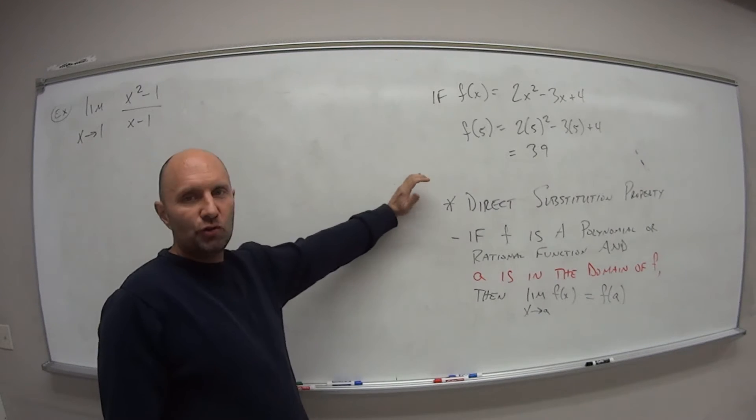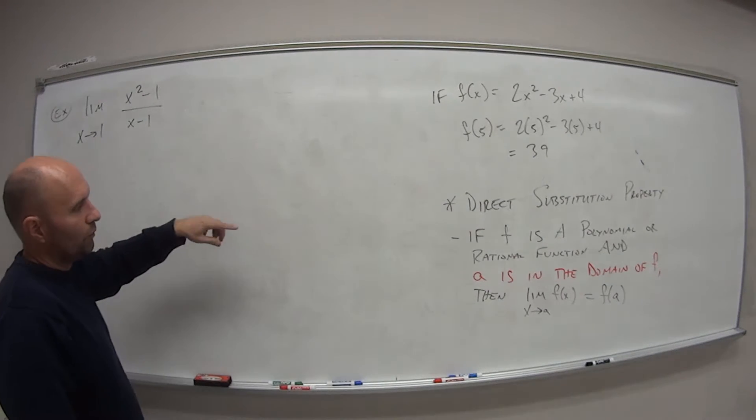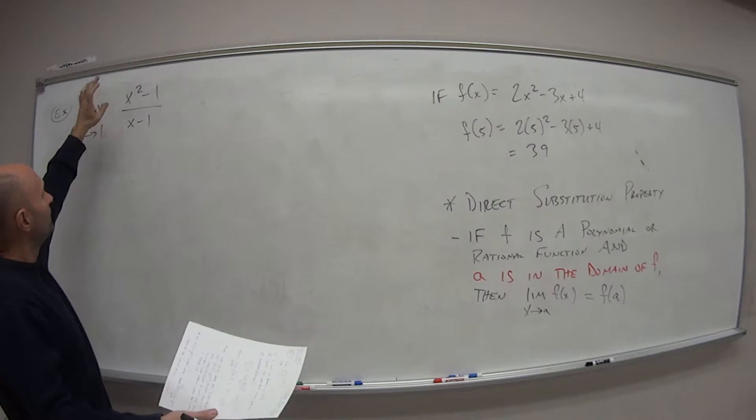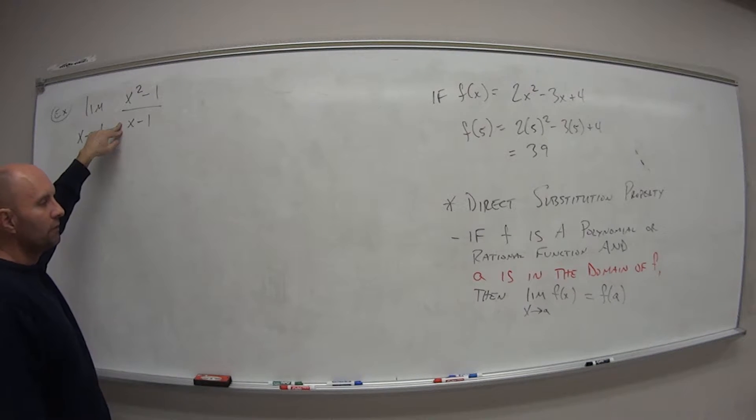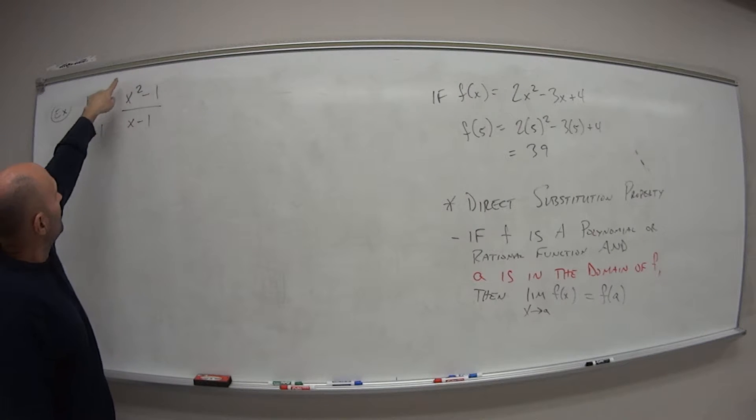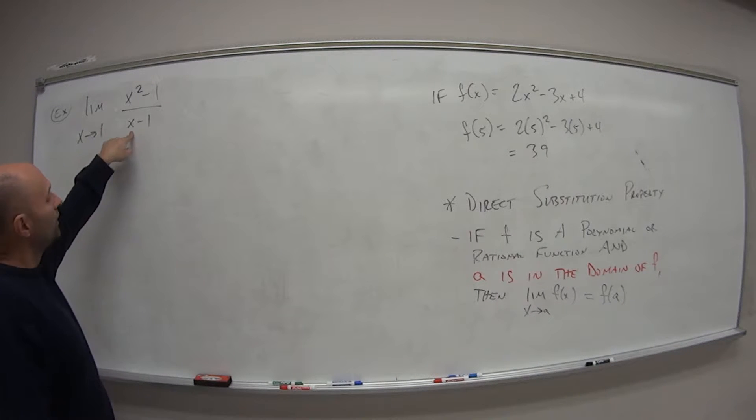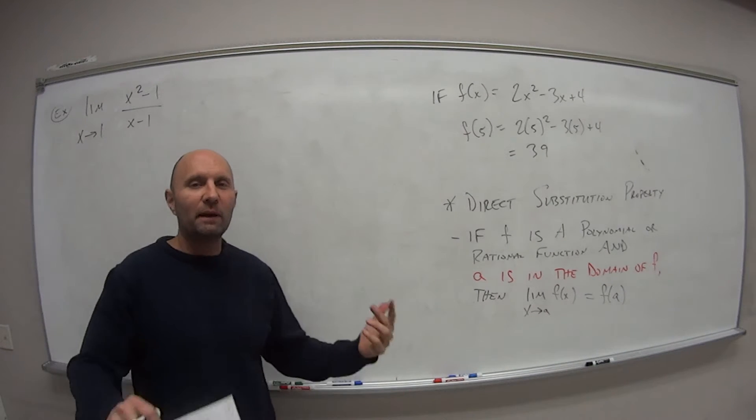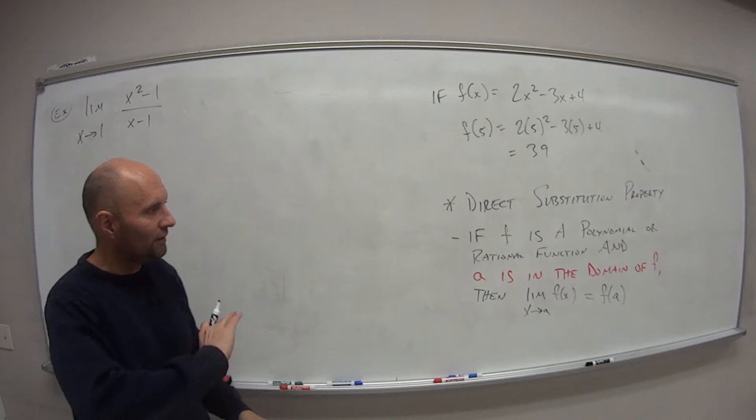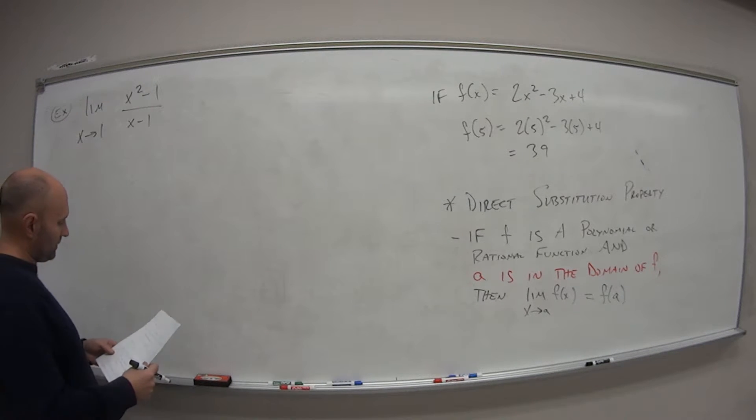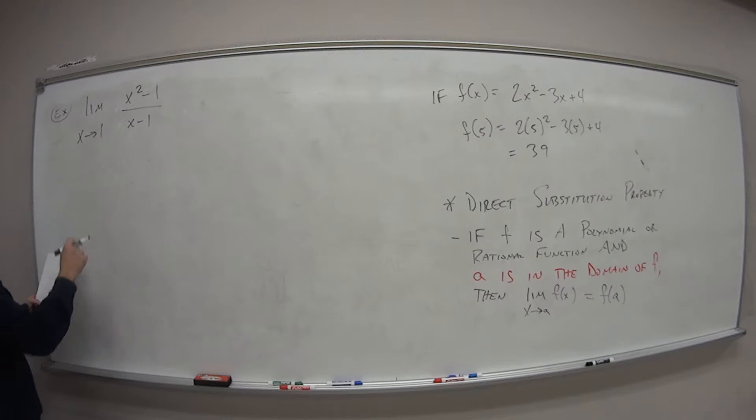So let's look. Can we just do direct substitution? Well, this is a rational function. Rational meaning what? Ratio. It's one polynomial over the other. So, is 1 within the domain of this function, and the answer is, unfortunately, what? No, right? Because if I plug in 1, it gives me 0 in the denominator. That means bad things. So it's not. So we can't just use direct substitution.